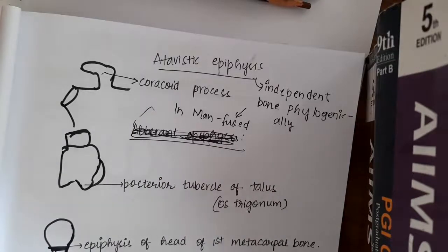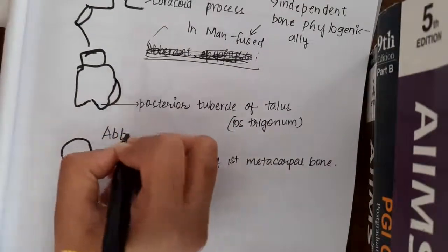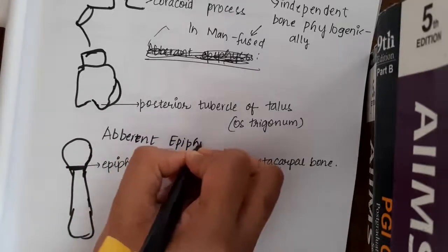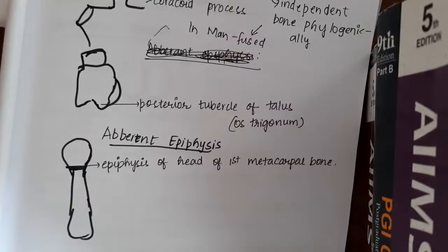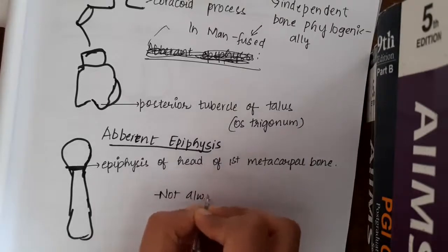Then we also have one more which is called as aberrant epiphysis. The fourth type is aberrant epiphysis. This aberrant epiphysis is not always present. It might be present or it may not be present.